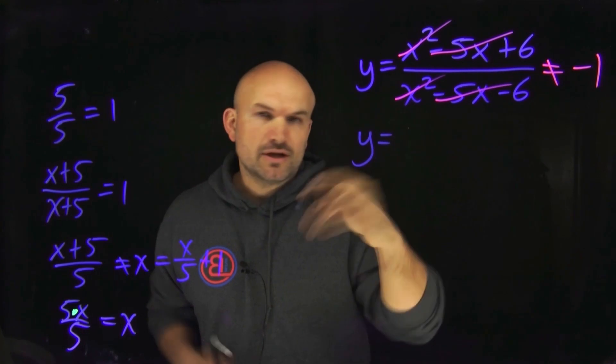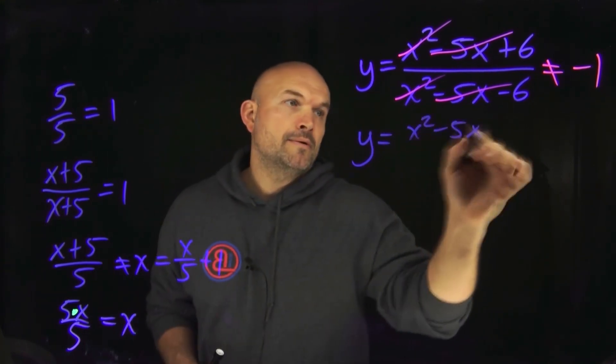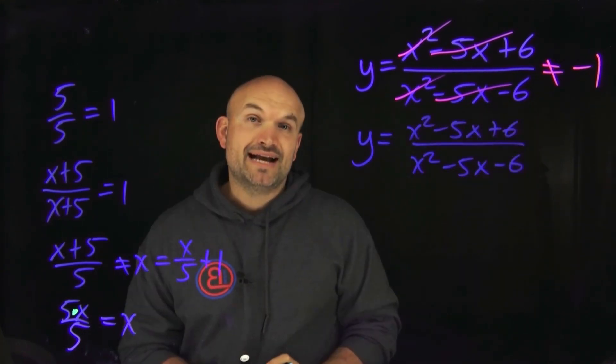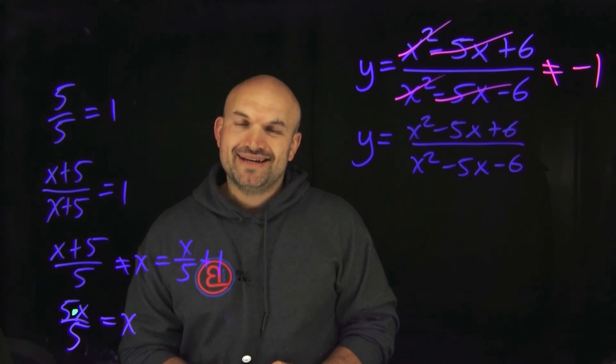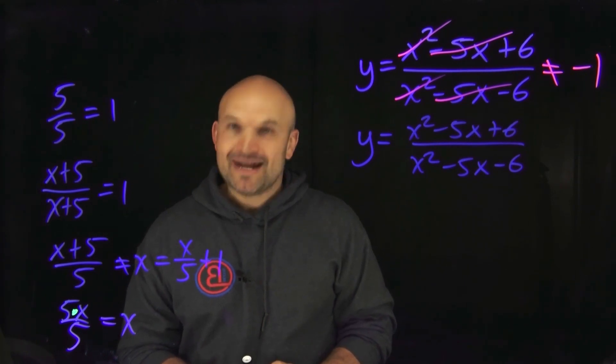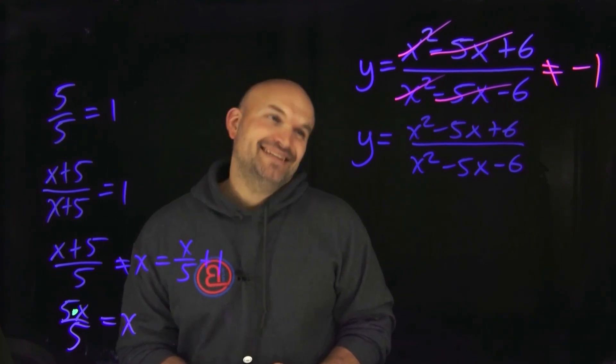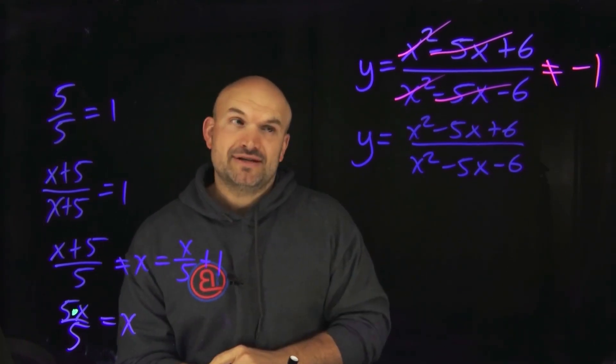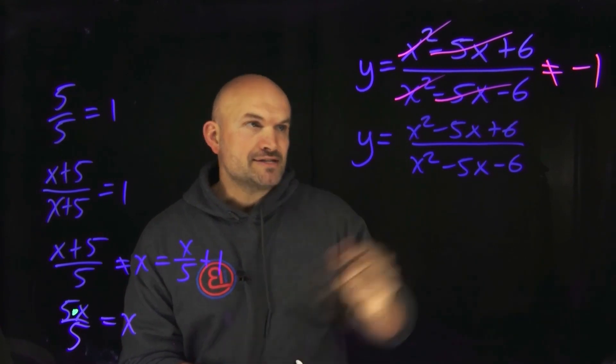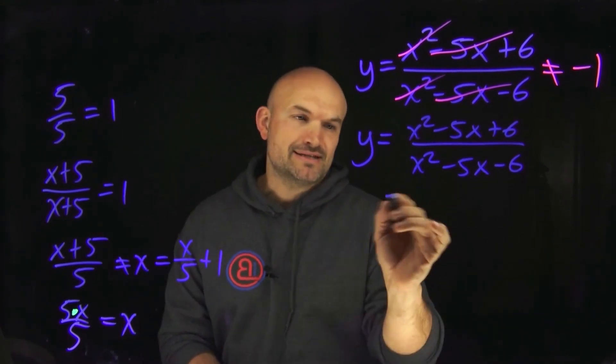So when we look at this problem, the way it was originally written, we need to rewrite it as terms separated by multiplication, which is everybody's favorite process, which we call factoring. That's right. So what we're going to need to do is factor this. And so when we go ahead and factor this, we're going to get something like this.